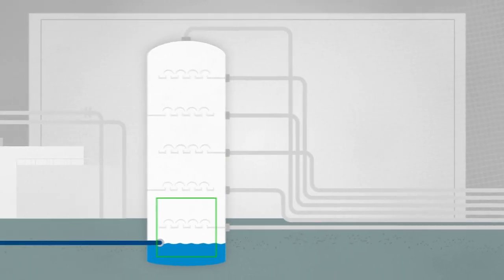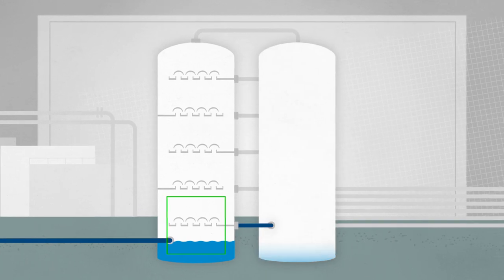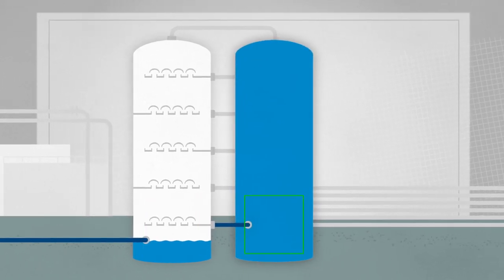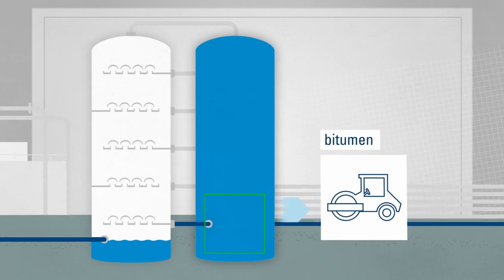The substance that collects right at the bottom goes for further processing in another column under vacuum, and the residue there is used to produce bitumen, the basis for asphalt.